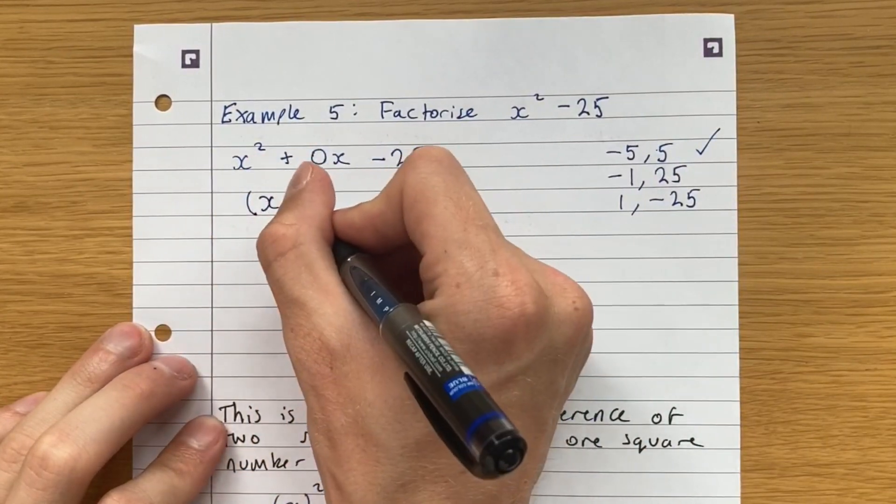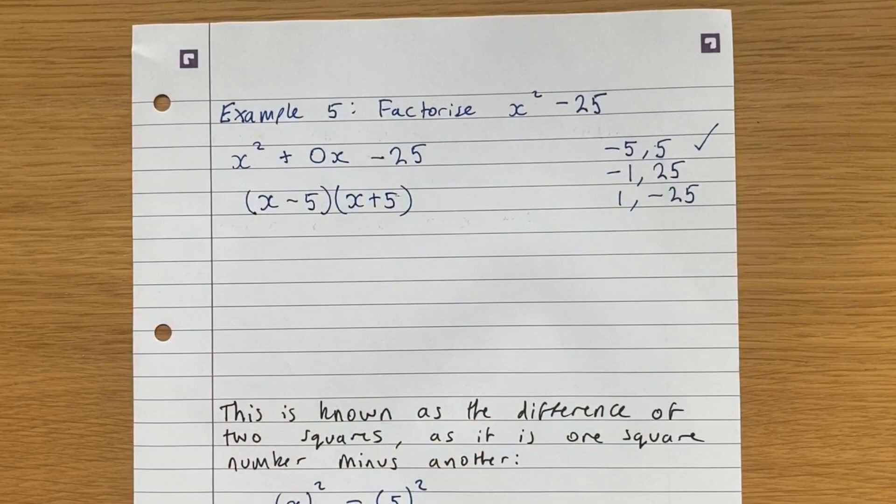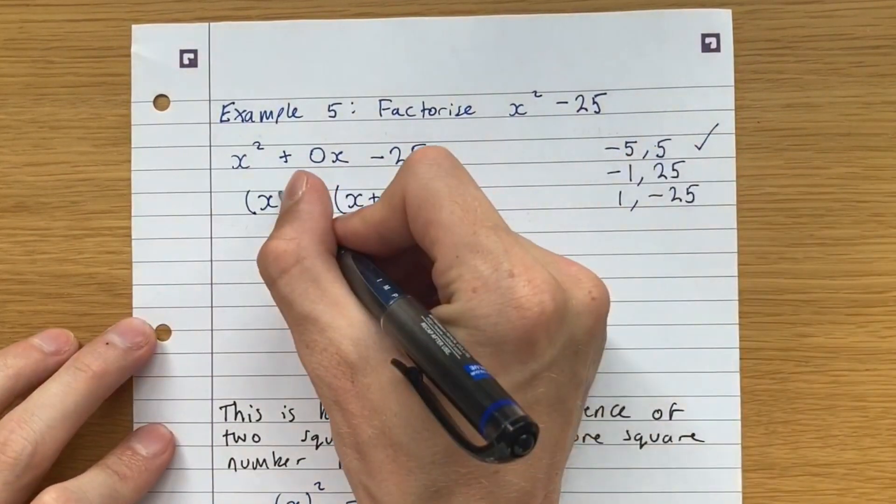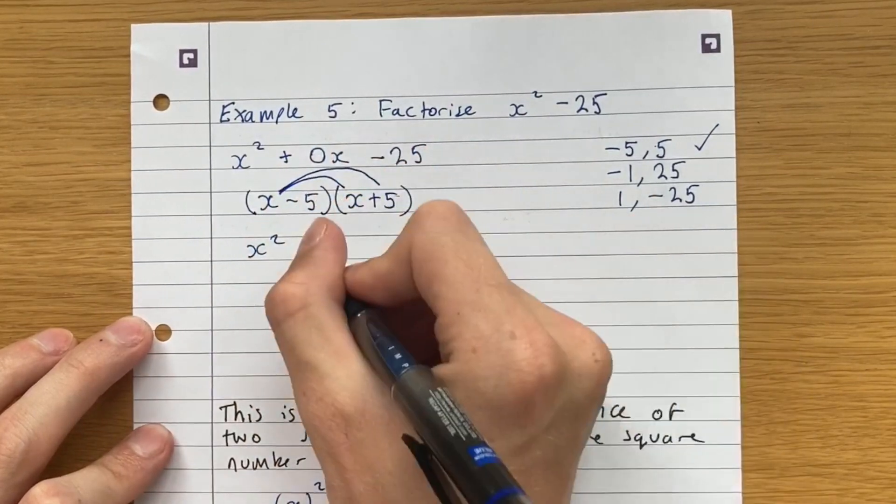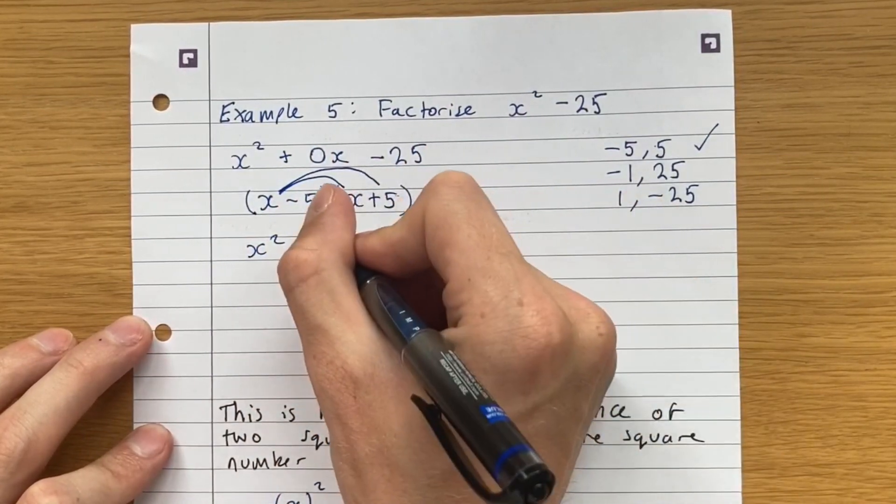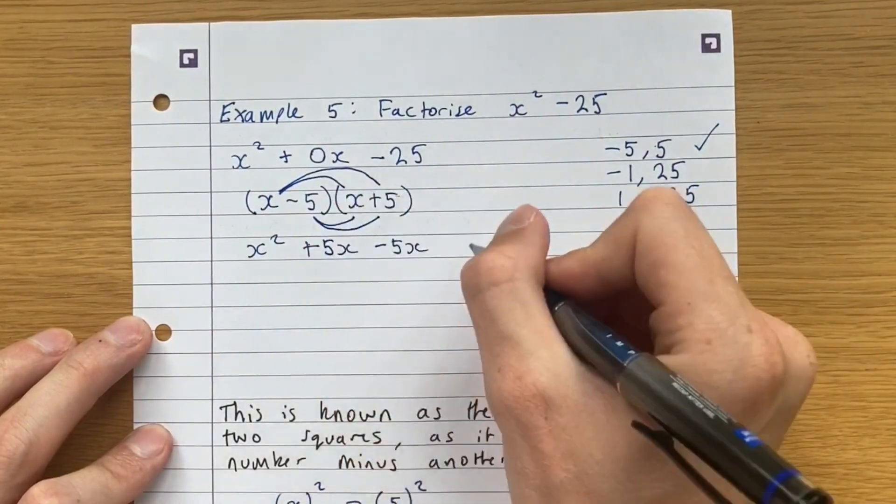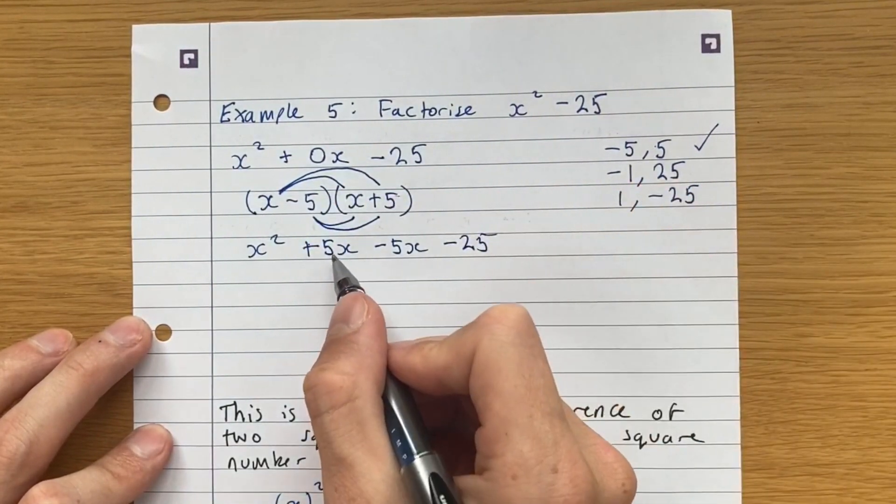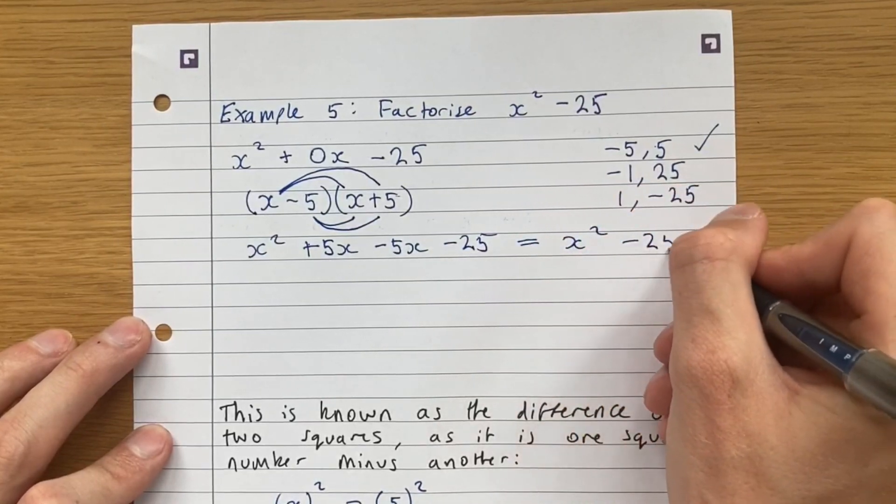Therefore, we have x minus 5 and x plus 5. And I'll just show you how this works. Again, x squared plus 5x minus 5x minus 25. And here, 5x minus 5x cancels. This is just equal to x squared minus 25.